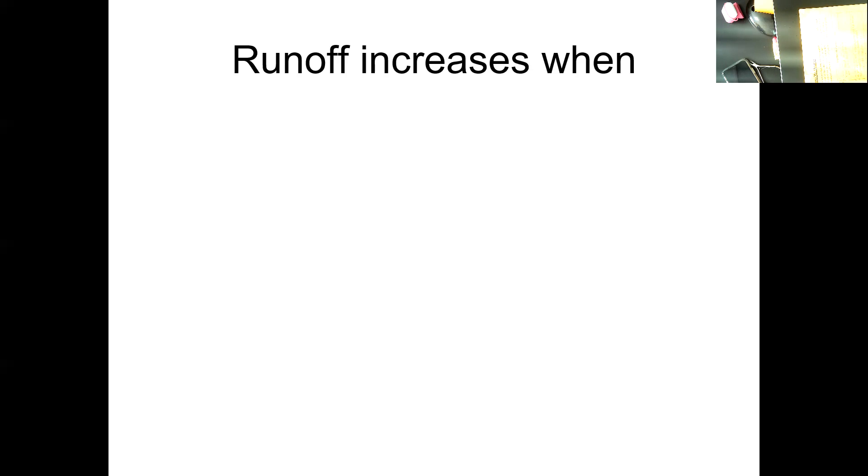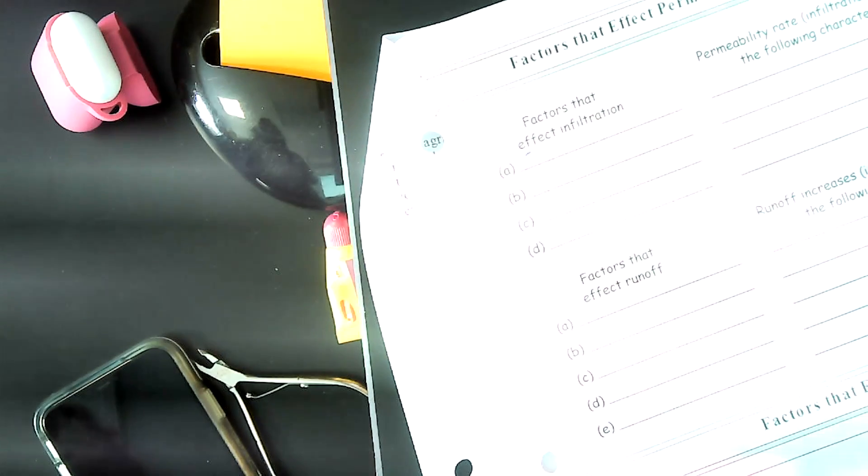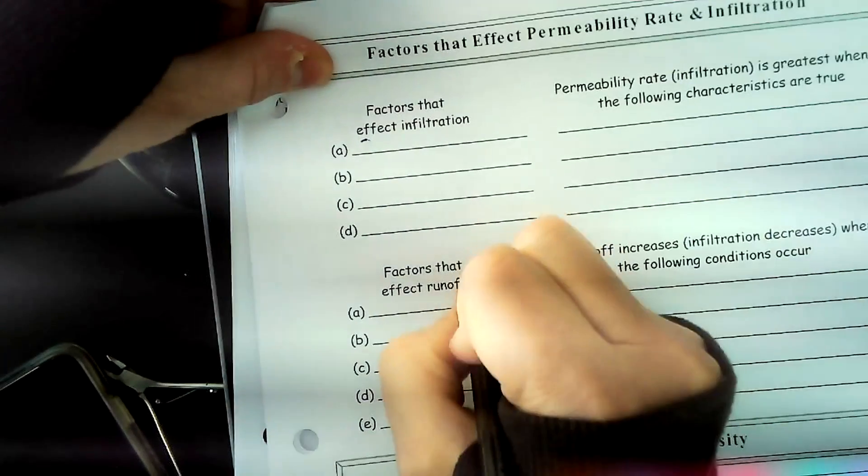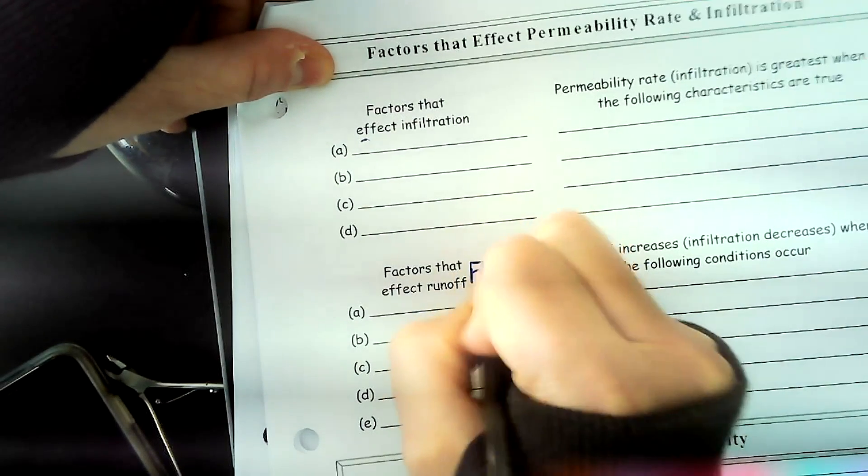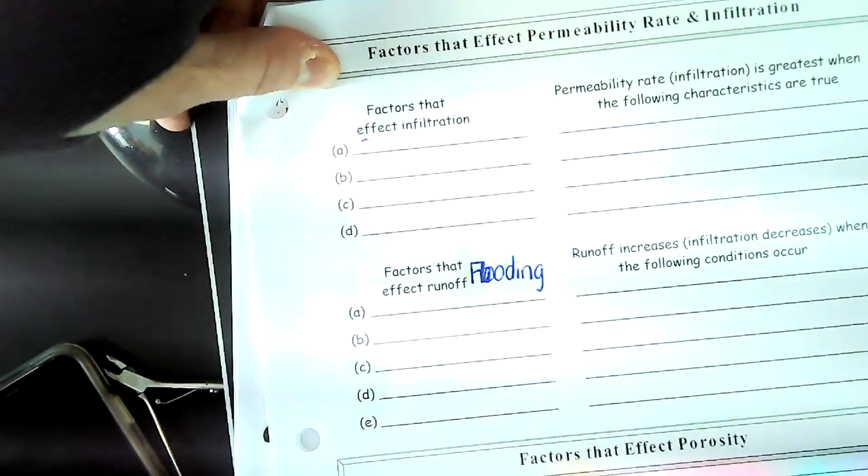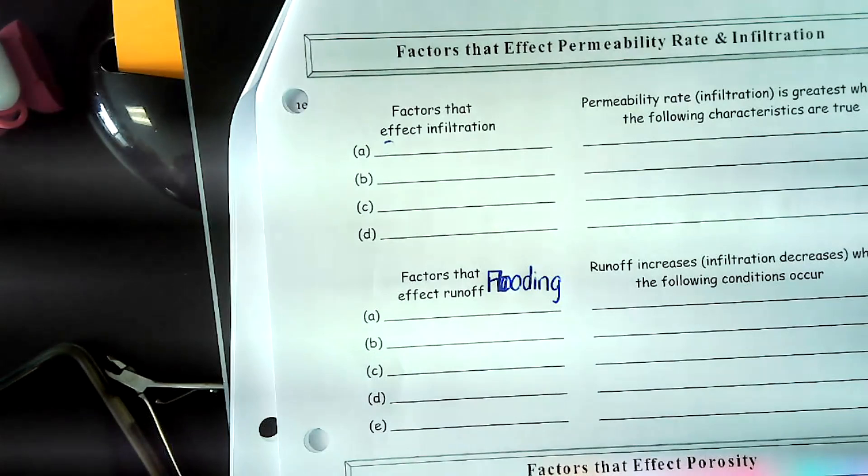Let's put that at the top right where you have runoff. Let me grab the packet so I know exactly what you're looking at. Right where it says, so right here, factors that affect runoff, in this space right there, right, flooding. Hang on, I'll show you. I'll stop the share and you can see. Right, factors that affect runoff, right here. Oh, spell it right. Flooding, flooding. Okay, so runoff and flooding are practically the same thing.